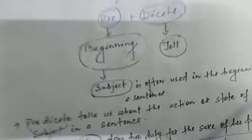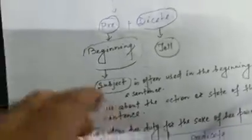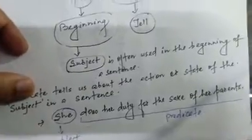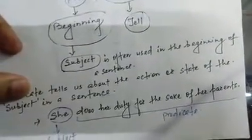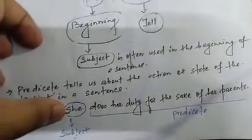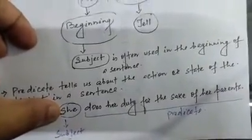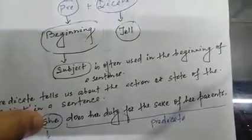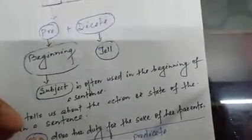Predicate tells us what the subject is doing. For example, 'She does her duty for the sake of her parents.' Here your subject is 'she,' and 'does her duty for the sake of her parents' is your predicate. The first part is your subject and the remaining part is your predicate.